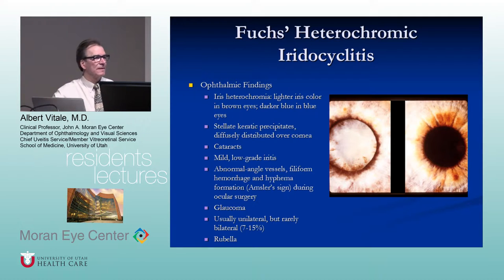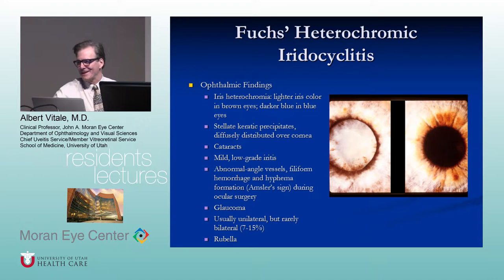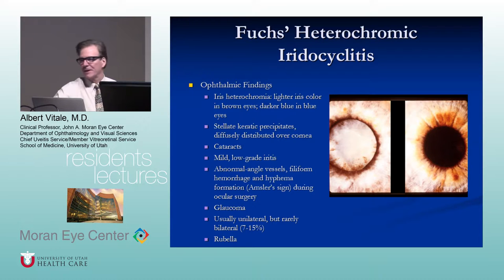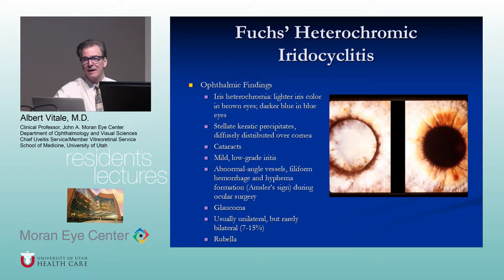Fuchs is usually unilateral. Recently there has been a lot of literature on Fuchs — Ernst Fuchs described this in the 1800s. There is pretty convincing molecular data suggesting that rubella is the etiologic illness, and the incidence of Fuchs has decreased dramatically since people have been immunized.